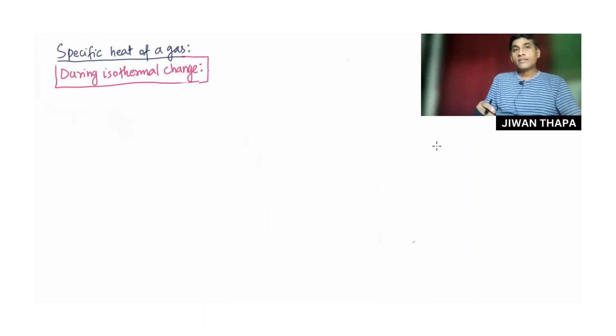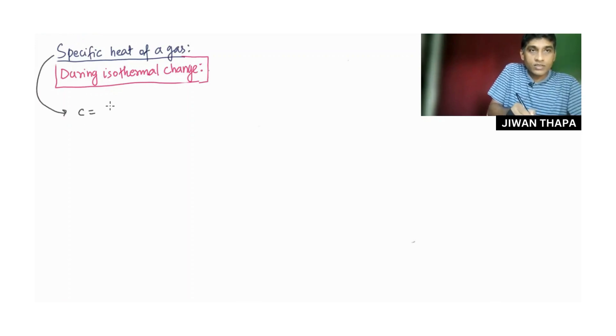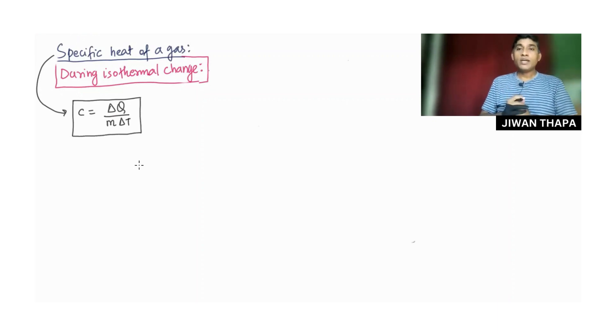Specific heat of gas is given by the expression C equals delta Q divided by m delta T. We are going to find the value of specific heat of a gas during isothermal change.